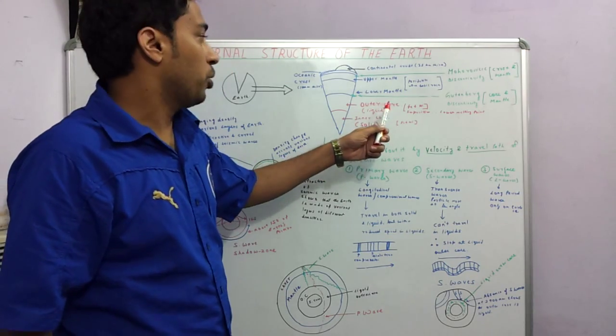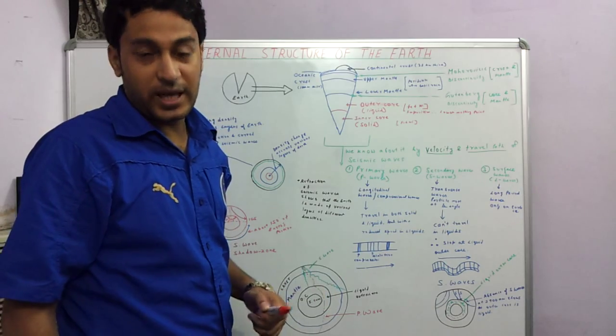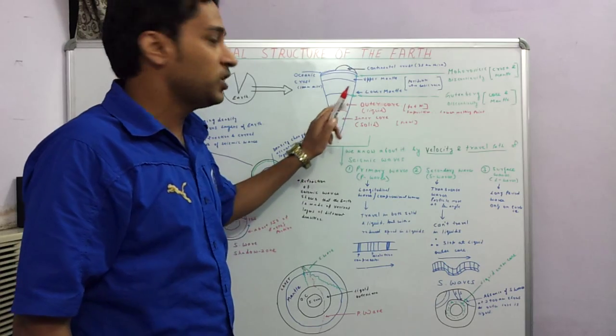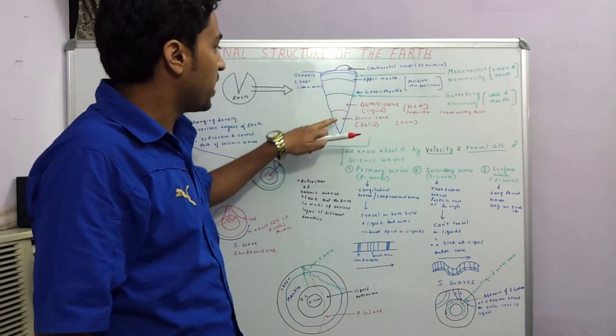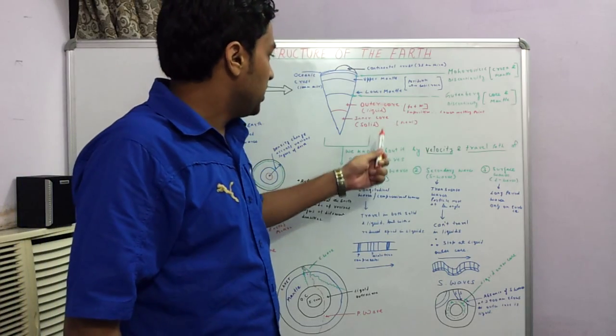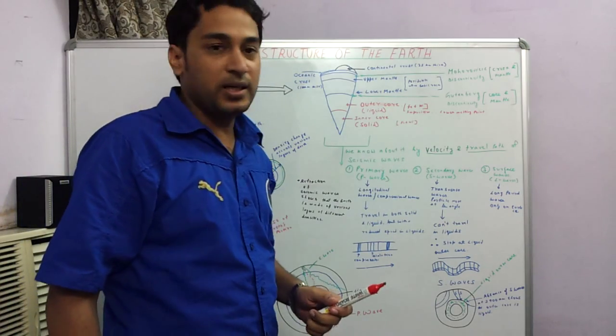The outer core is liquid because it has certain impurities, and these impurities lower the melting point. Moreover, the pressure is also lesser as compared to the inner core. Both the inner and outer core are made up of nickel and iron.